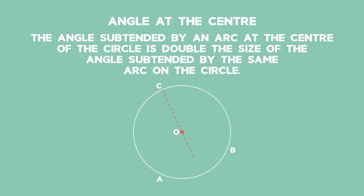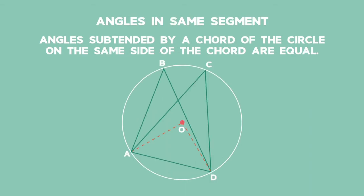The angle subtended by an arc at the centre of the circle is double the size of the angle subtended by the same arc on the circle. Angles subtended by a chord of the circle on the same side of the chord are equal.